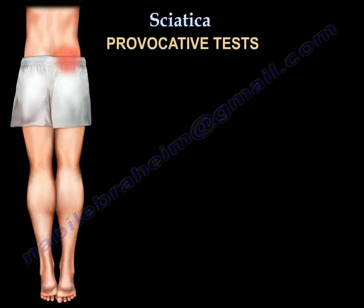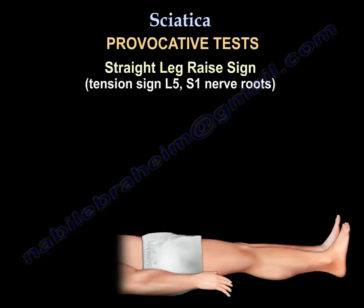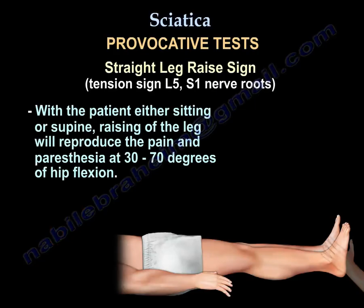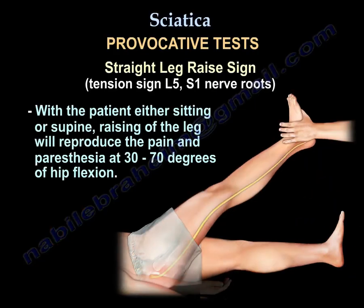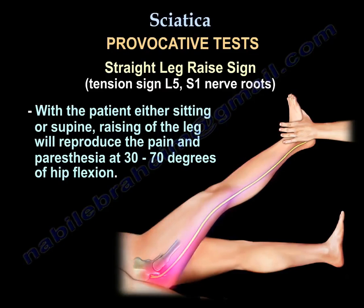Provocative tests include the straight leg raising test, also called the tension sign, which applies to L5 to S1 nerve roots. Performed either sitting or supine, it will reproduce pain and paresthesia in the leg at 30 to 70 degrees of hip flexion.